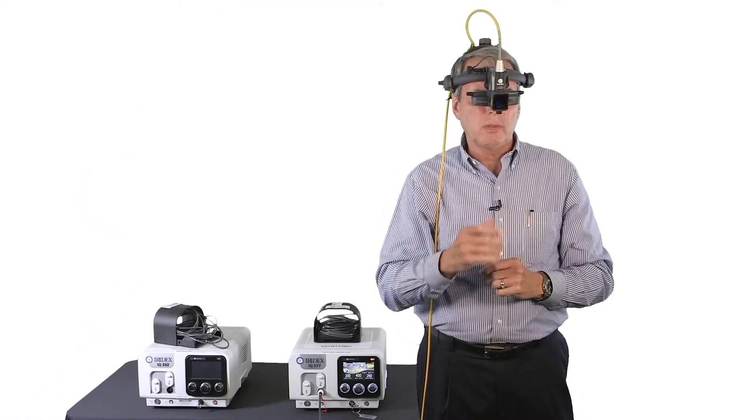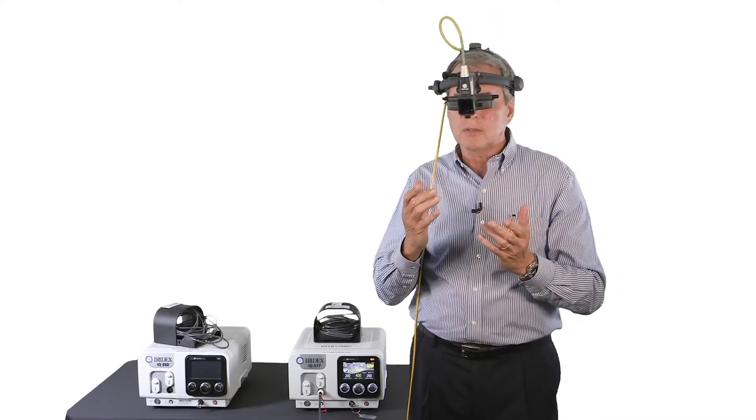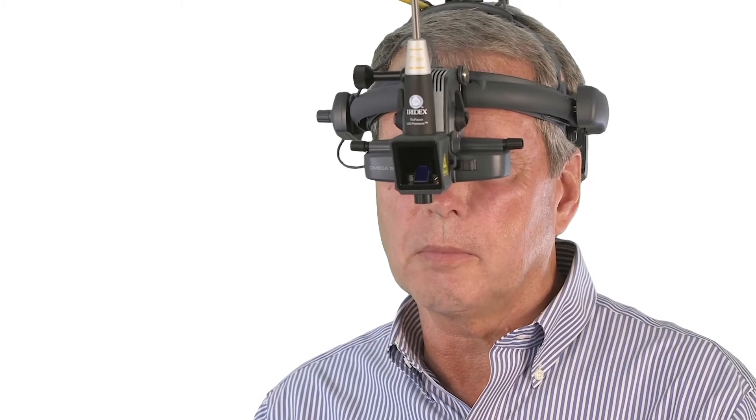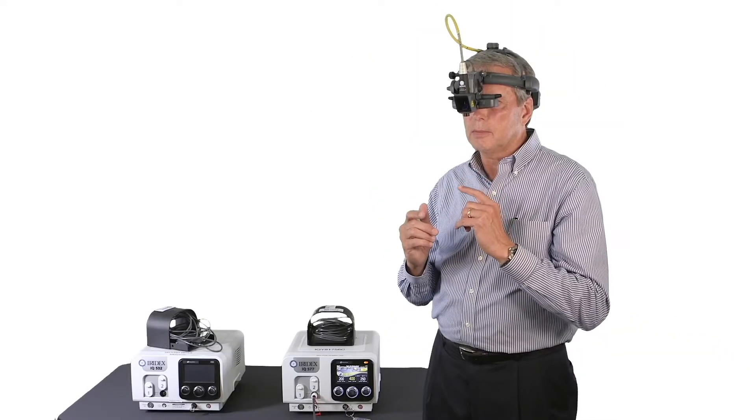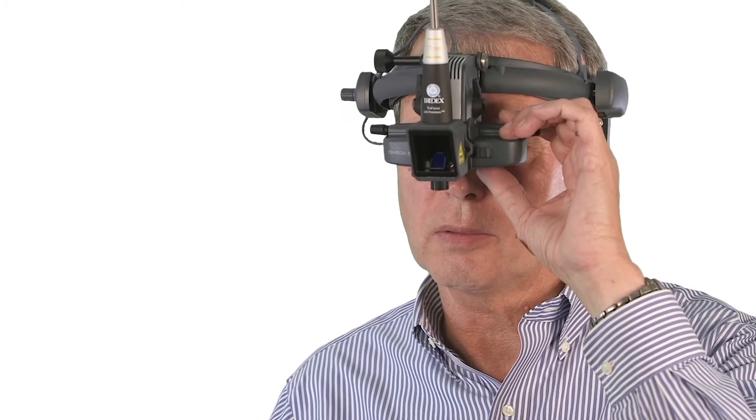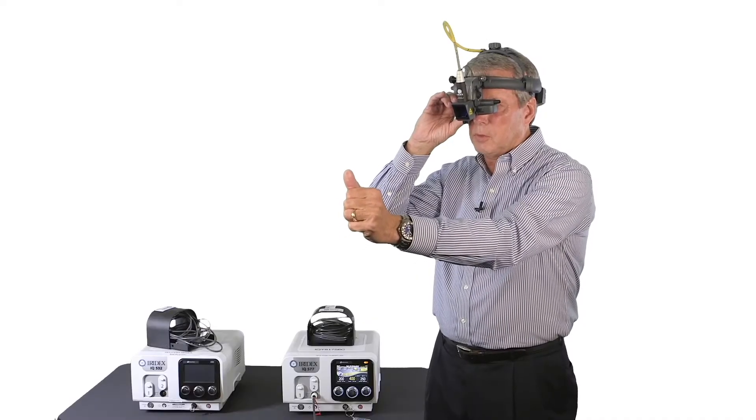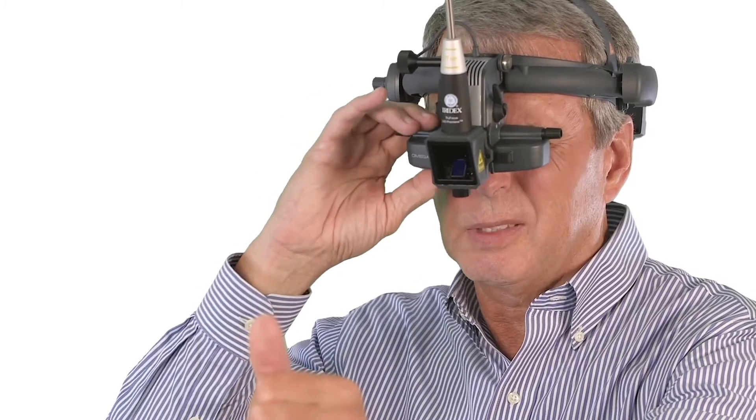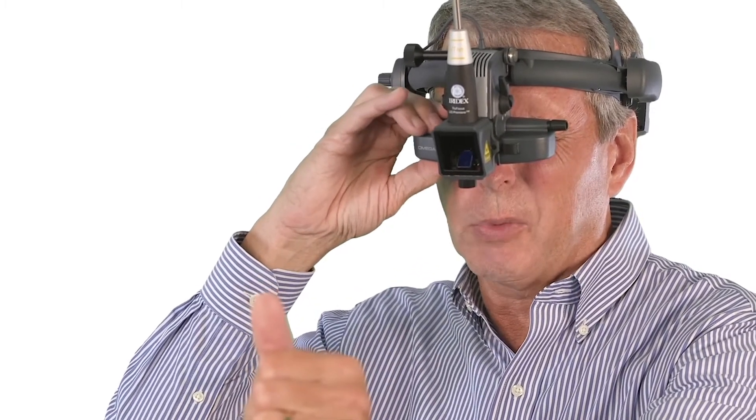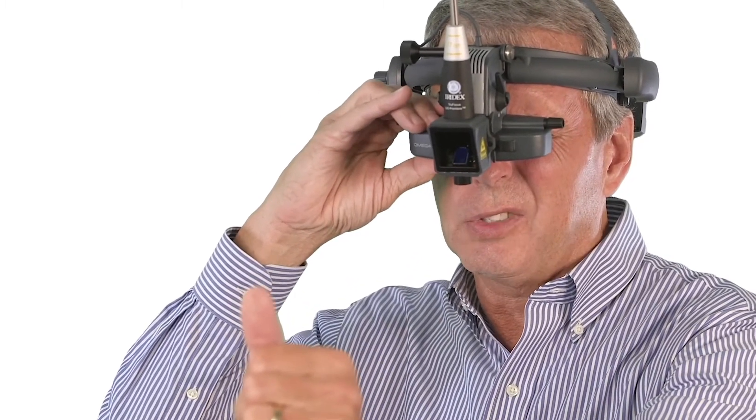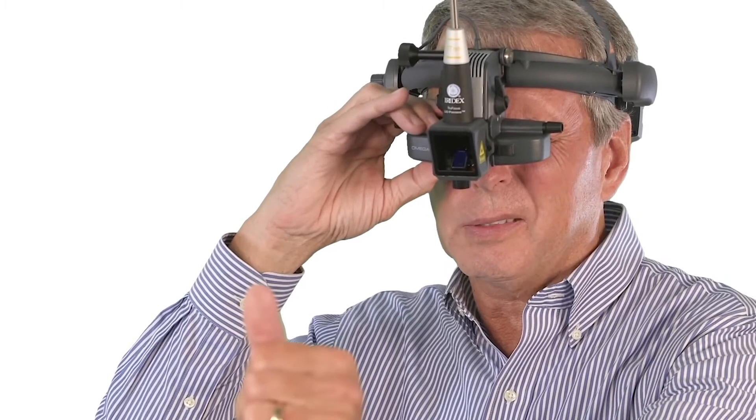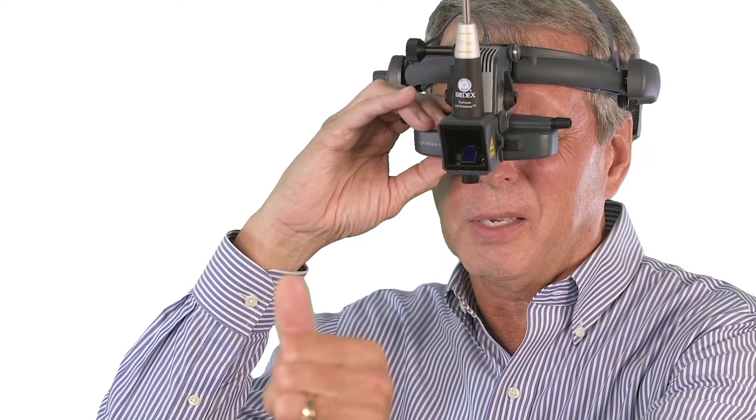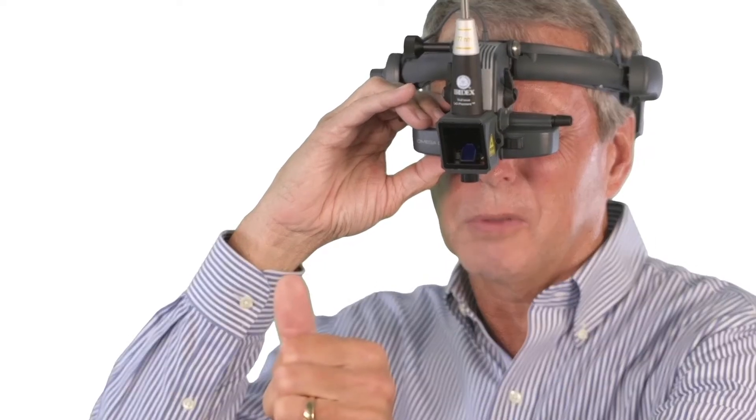At this point, you want to set the pupillary distance. What you want to do is adjust one ocular at a time since they work independently. You'll close one eye, adjusting the right ocular, about a 15-inch focal plane from your thumb to the optics body. Close the left eye, keep the right eye open, and slide the ocular left or right until you have your target in the middle of your field of view.